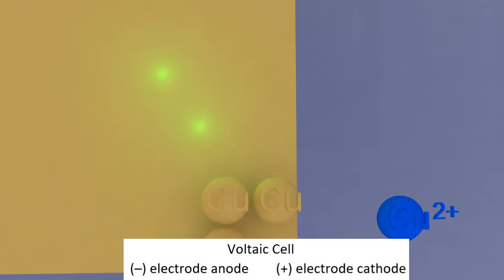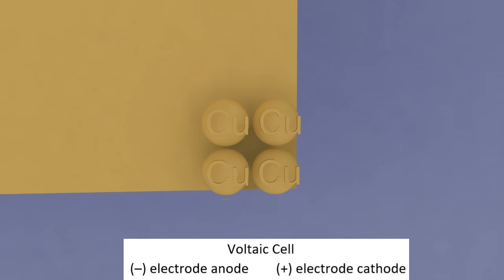Reduction is happening. Reduction is gain of electrons. The copper two plus ion gains two electrons to make copper.